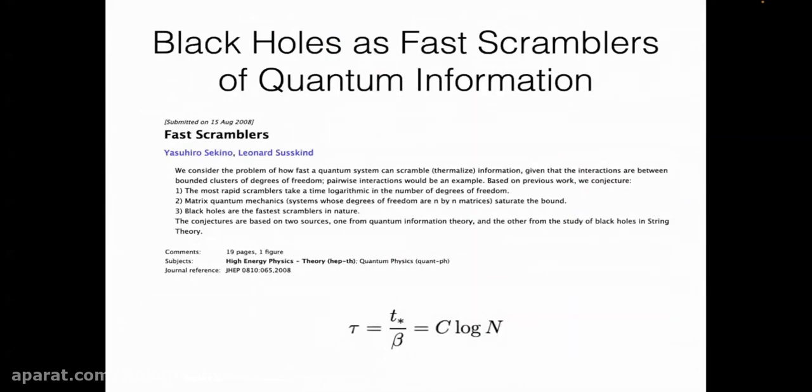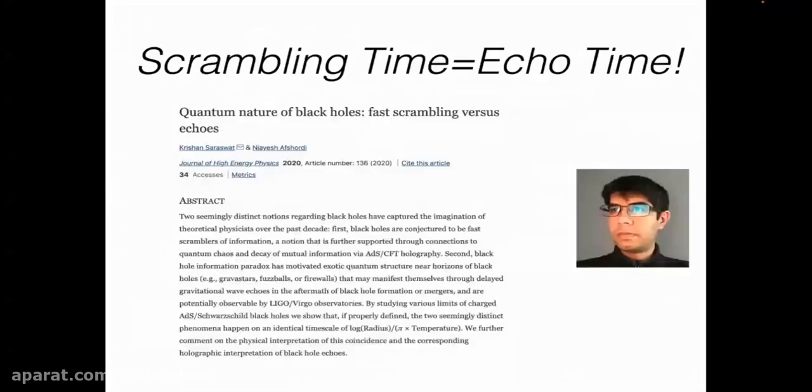You could actually do the calculation of reflection off the Hawking atmosphere or plasma. We did it explicitly for electron positrons and get basically the same result. We did it in two different ways. Then you get the same formula, which is Boltzmann reflectivity. The time scale for the reflection turns out was first proposed by Sechino and Susskind in a holographic context. This is a time scale, the fastest things can be scrambled. Information can be scrambled. This time scale happens to be exactly the time scale for echoes.